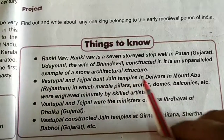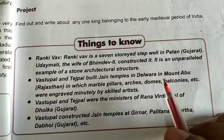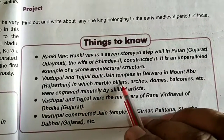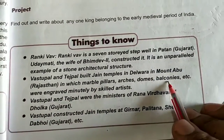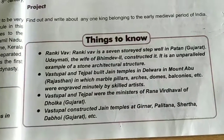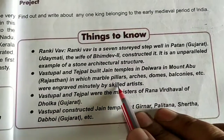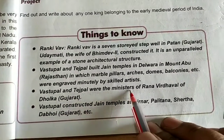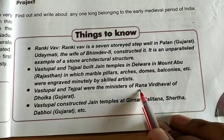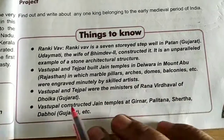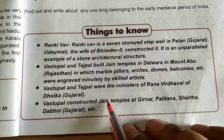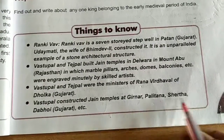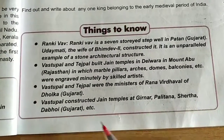Vastupal and Tejpal built Jain temples in Dilwara in Mount Abu, Rajasthan, in which marble pillars, arcs, domes, balconies, etc. were engraved minutely by skilled artists. Vastupal and Tejpal were ministers of Rana Veerdawal of Dolka, Gujarat. Vastupal also constructed Jain temples at Girnar, Palitana, Shertha, Daboy, Gujarat, etc.